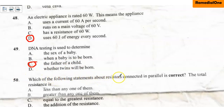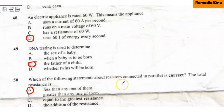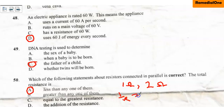Question number 50: Which of the following statements about resistors connected in parallel is correct? The total resistance is — A. Less than any one of them, B. Greater than any one of them, C. Equal to the greatest resistance, D. The addition of all resistances. The correct answer is option A. When resistors are connected in parallel, the total resistance is always less than any one of them. For example, with resistors of 1 ohm and 2 ohms in parallel: 1/R_total = 1/1 + 1/2, giving a total resistance less than 1 ohm.